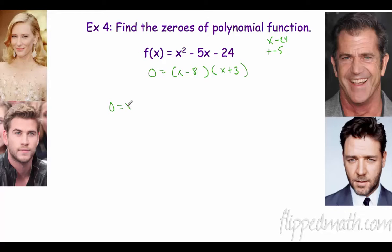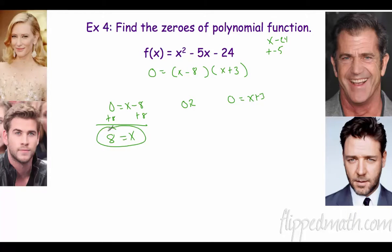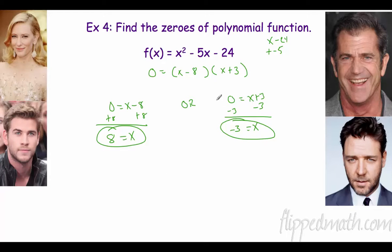So 0 equals (x minus 8), or 0 equals (x plus 3). Add 8 to both sides: x could be 8. Subtract 3: x could be negative 3. Quick check: x times x is x squared, negative 8 times 3 is negative 24 — all right, it's a good habit to get into. I'm bad at it, I'm sorry.